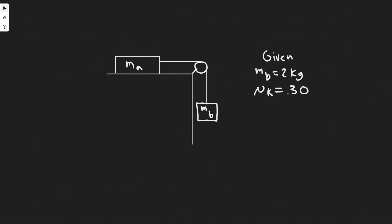In this problem we're told, in this figure, the coefficient of static friction between MA and the table is 0.4, whereas the coefficient of kinetic friction is 0.3. Part A: what minimum value of MA will keep this system from starting to move? Part B: what value of MA will keep this system moving at a constant speed?